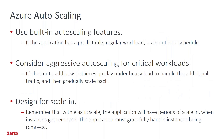Looking specifically at Azure auto scaling: if an application has a predictable, regular workload, you can scale on a schedule — as FanDuel or DraftKings would, knowing exactly what times they'll be hit. Additionally, aggressive auto scaling for critical workloads adds new instances quickly under heavy load to handle traffic, then scales back afterwards. The money saved by not staying scaled out is tremendous. You also want to design for scale-in so the application can gracefully handle those instances being removed.